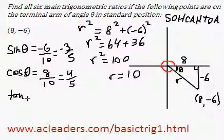Then we have tangent of theta. And tangent is opposite over adjacent. So negative 6 over 8, which simplifies into negative 3 over 4.